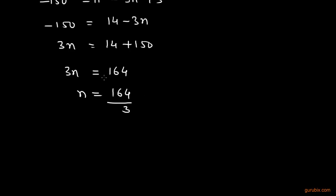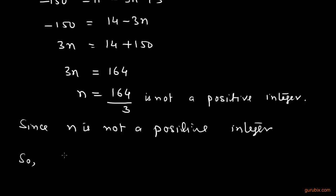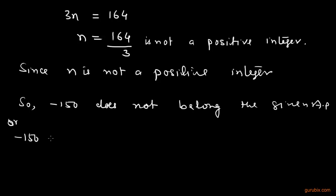What we observe here is that this 164 over 3 is not a positive integer. Since n is not a positive integer, so -150 does not belong to the given AP, or -150 is not a term of given AP. This is the solution. Thank you.